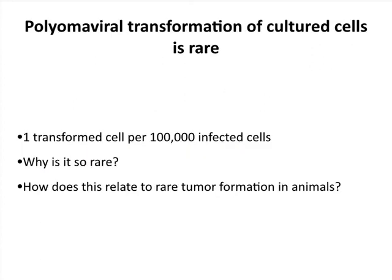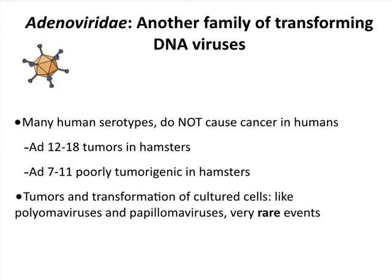Something interesting is developing here — transformation is very rare: one in 100,000 infected cells is transformed. Adenoviruses — larger DNA-containing viruses, many serotypes infecting humans, do not cause tumors in people — but in the wrong host like hamsters they will cause tumors and transform hamster cells in culture. Like polyomas and papillomas, transformation and tumor formation are rare. People could not figure out what this meant until the discovery of what are called T or tumor antigens. By studying cells transformed in culture and tumors from infected animals, researchers found that transformed cells and tumors all expressed at minimum one virus protein — the T antigen, or tumor antigen.